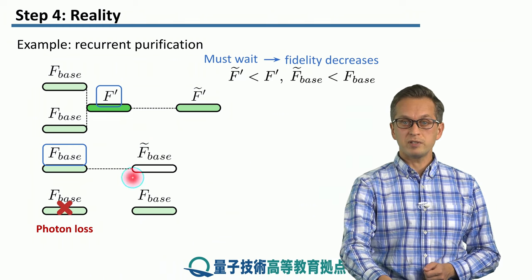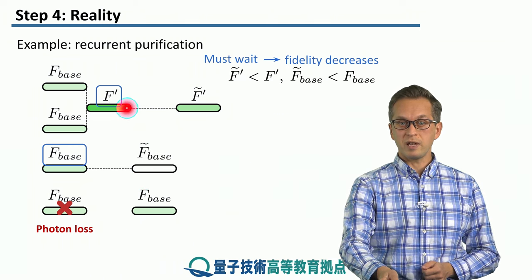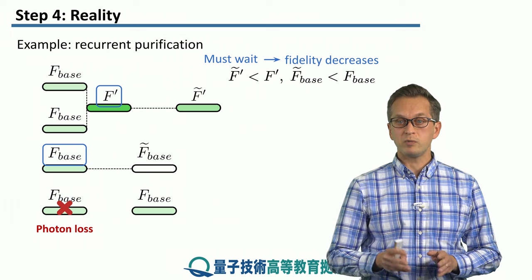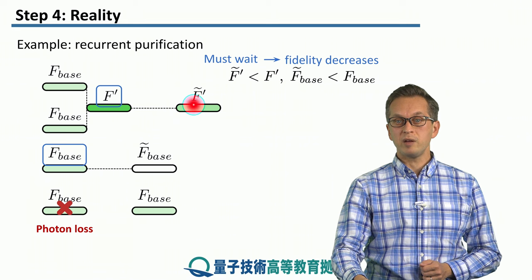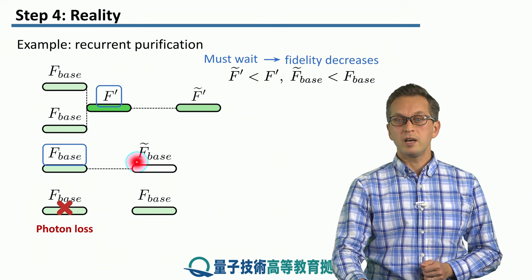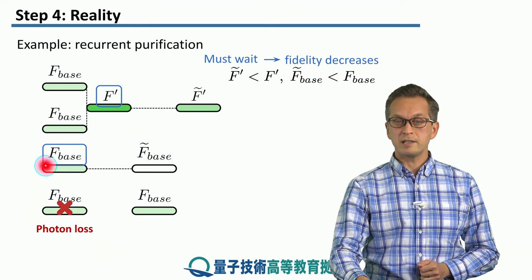So the fidelities that we previously considered to be constant, this F prime and F base, even when we had waiting time, in fact, they decrease. This F tilde prime is less than F prime. F tilde base is less than F base.